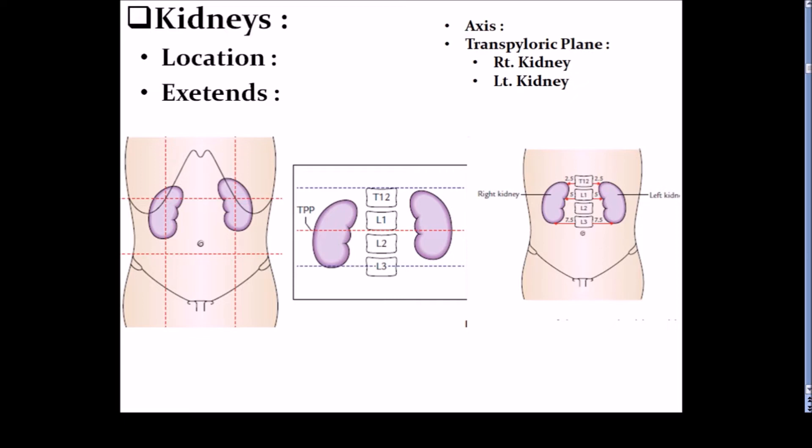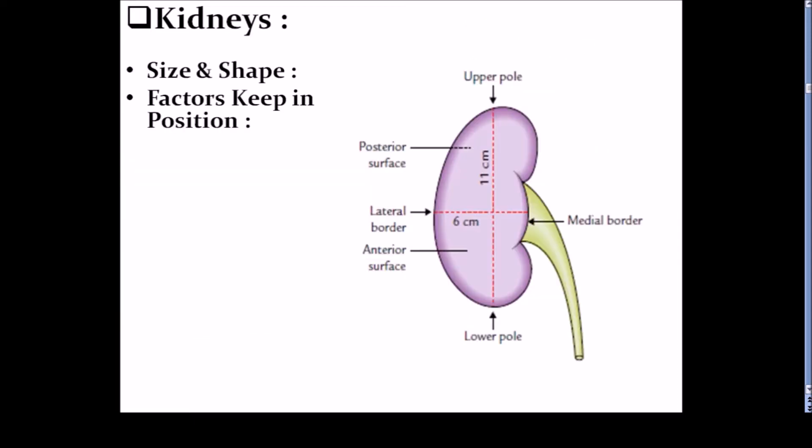Now the size and shape of a kidney: it is 11 cm in length, 6 cm width and the thickness is 3 cm. Weight in adult male, it is about 150 to 170 grams and in adult female, it is about 130 to 150 grams. The kidney is bean-shaped with hilum medially. The left kidney is longer, narrower and nearer to the vertebral column than the right kidney.